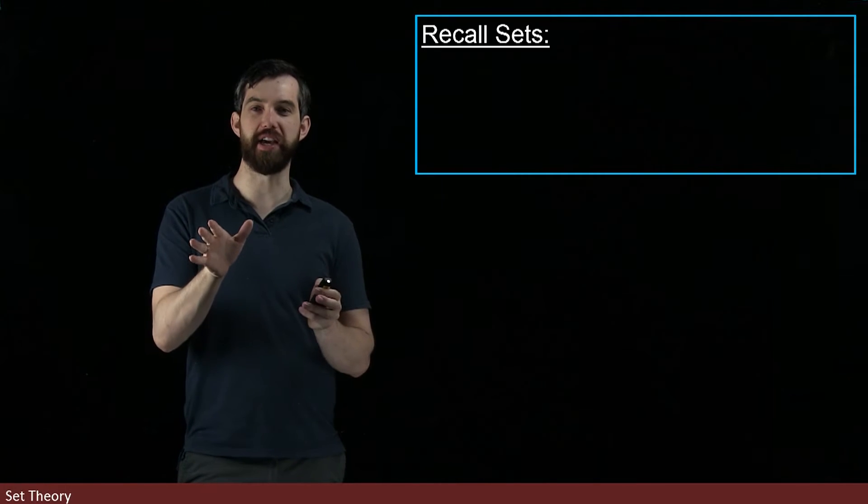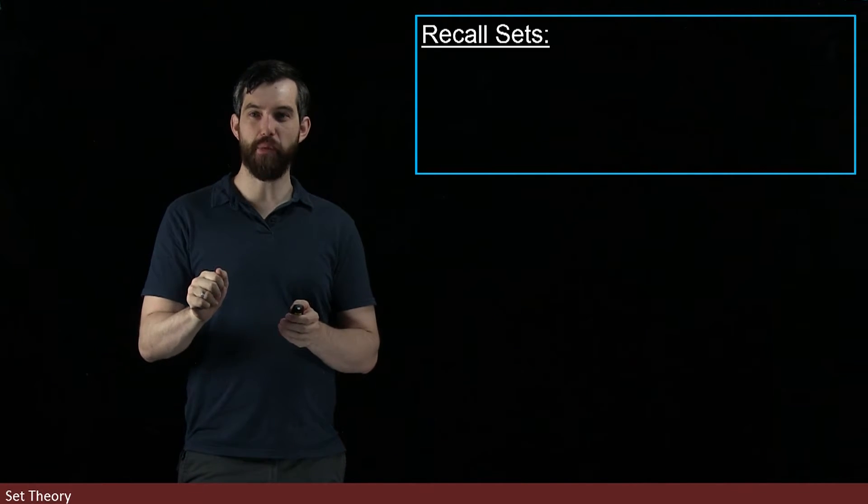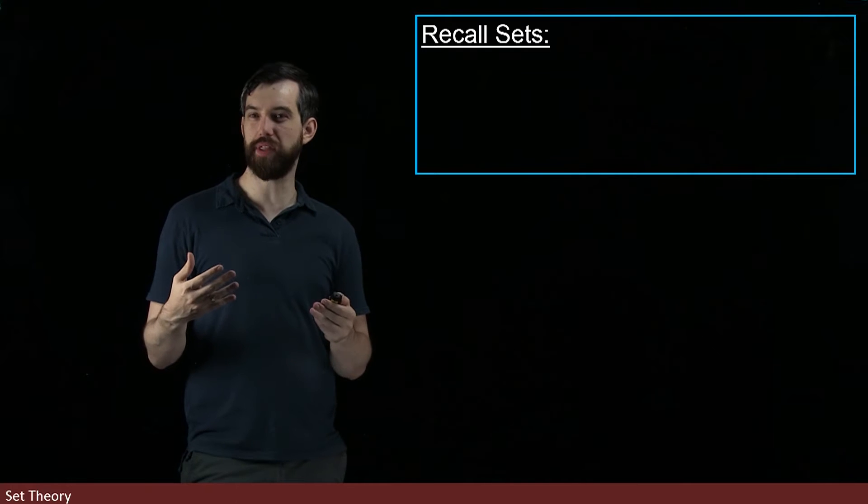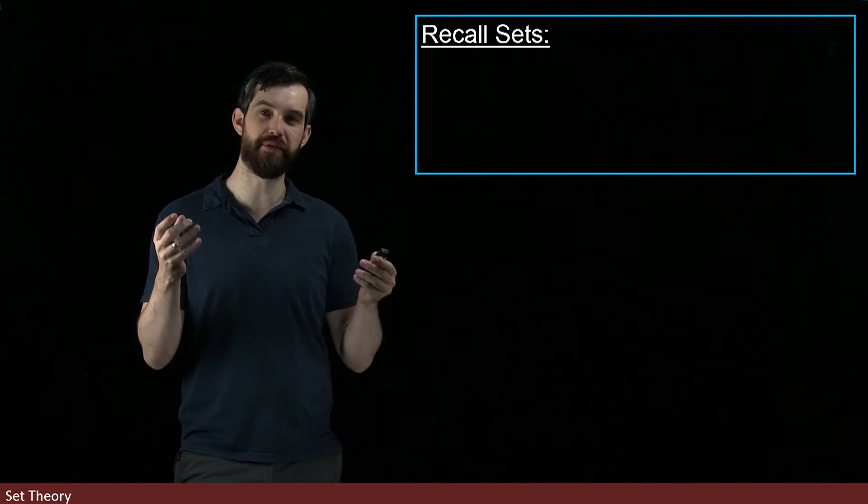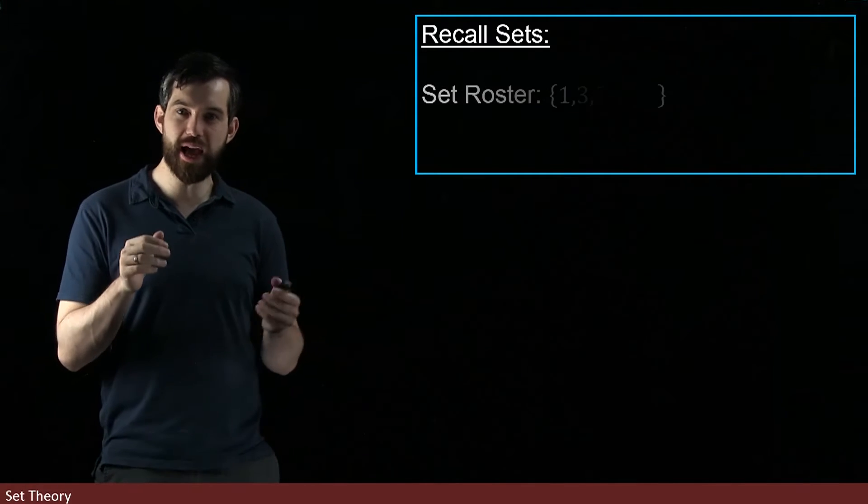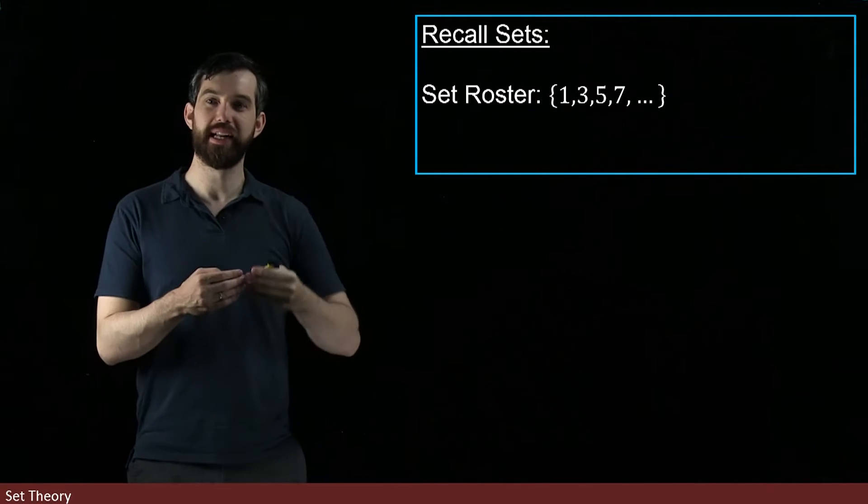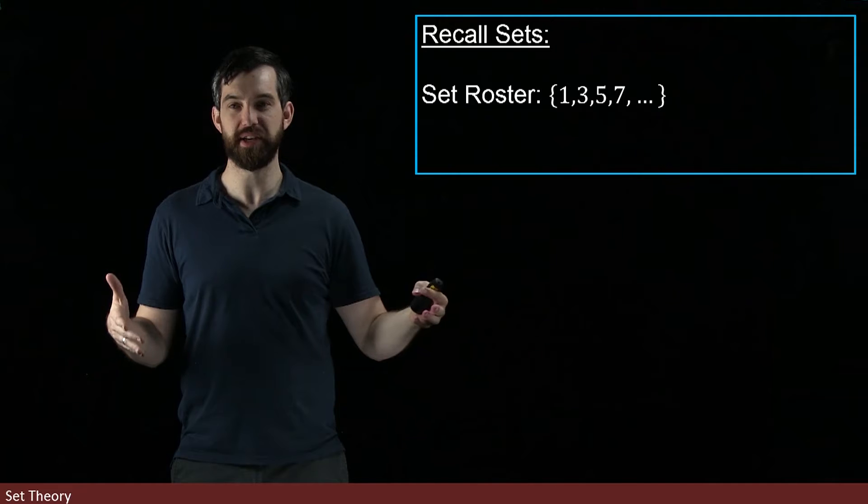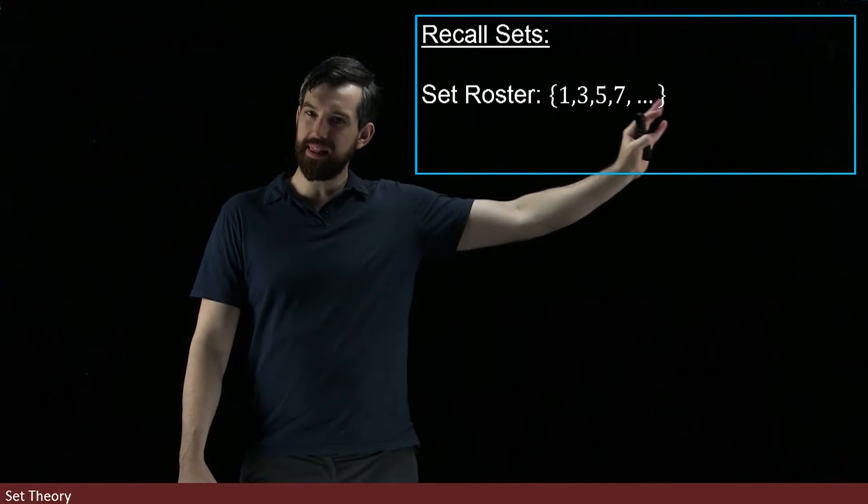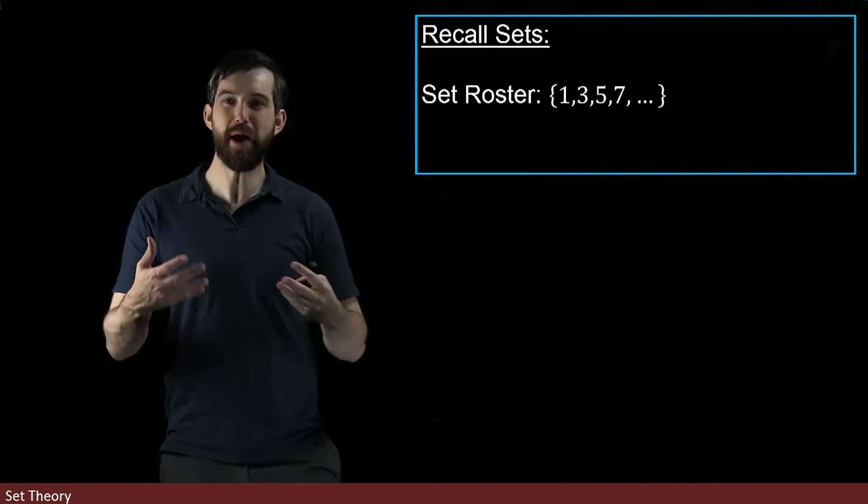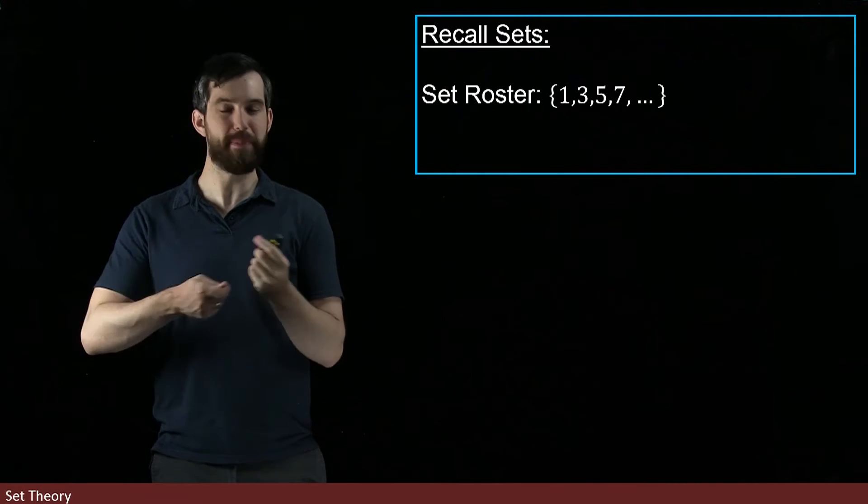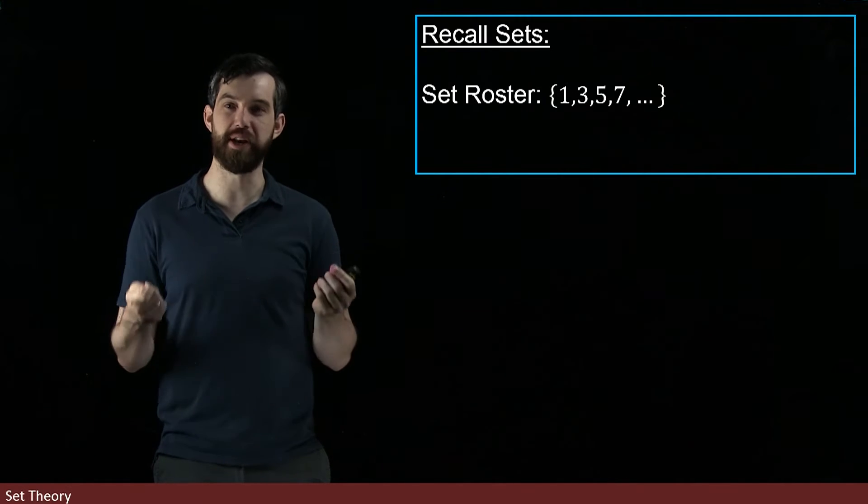I want you to recall the idea of sets. When we first introduced sets, we saw that there were two different types of notation for sets. On the one hand, we could have set roster notation. Set roster is where I just list all the elements of the set. You'll remember that in my listing, there were a couple things that didn't matter: repetition didn't matter and the order didn't matter.